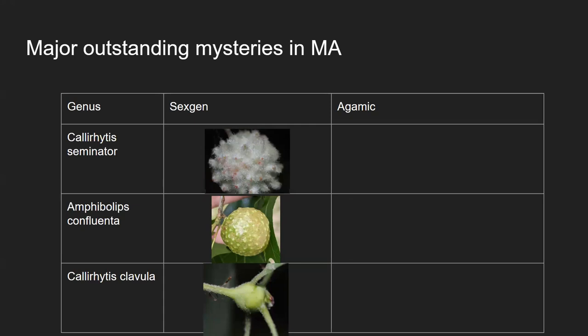I wanted to point you to a few current outstanding mysteries of interest in Massachusetts. These are three of the most commonly observed wasp galls here: the wool sower gall, the spongy oak apple gall, and the white oak club gall. All of them are spring sexual generation galls — the wasps will be emerging over the next month — and we have no idea what the alternate generation looks like. We know that whatever they're going to oviposit in has to be there now. They're not emerging and then waiting a month; they oviposit pretty much immediately right after they mate. So whatever tissue they're looking for has to already be there. It would be great to get people to try to rear some of these, put those wasps out on buds, and see if anything develops.